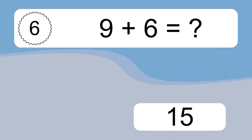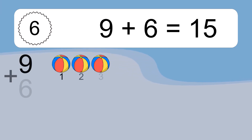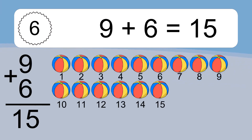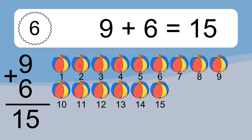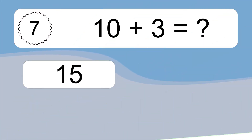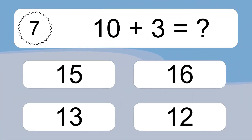Nine plus six equals what? Nine plus six equals fifteen. Let's count it: one, two, three, four, five, six, seven, eight, nine, ten, eleven, twelve, thirteen, fourteen, fifteen.